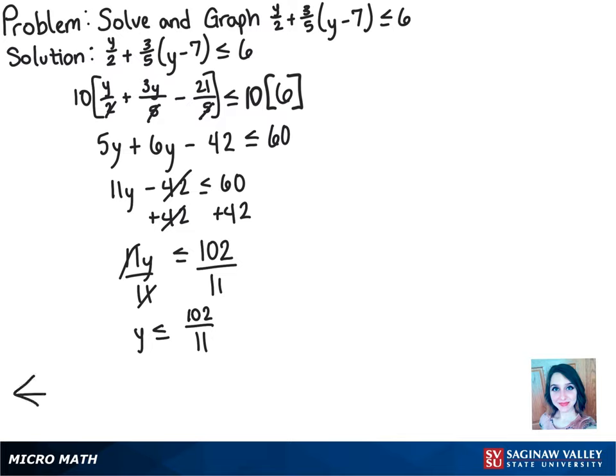To graph this, we'll plot 102 over 11, and since y is equal to it in addition to being less than it, we have to fill in that solid bubble.